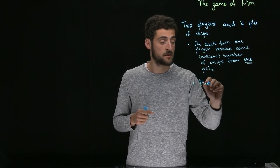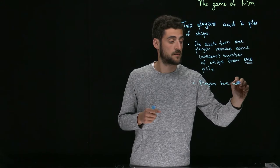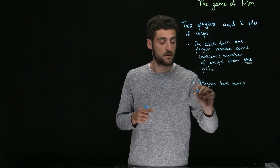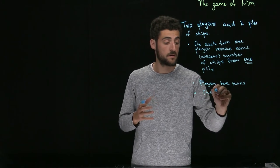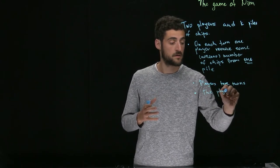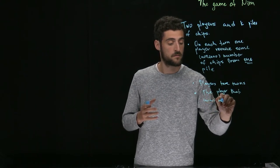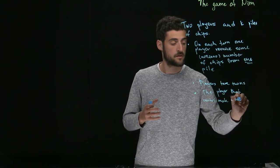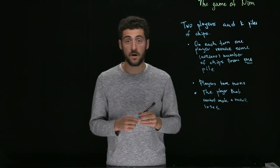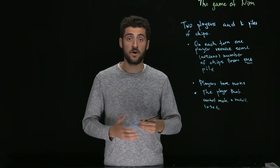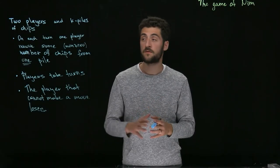Players take turns. The player that cannot make a move loses. In other words, it's a combinatorial game in normal play mode. Let's try to consider this game for different values of k.